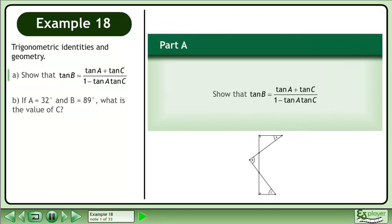In this example, we will study trigonometric identities and geometry. In Part A, show that tanB equals tanA plus tanC over 1 minus tanA tanC.